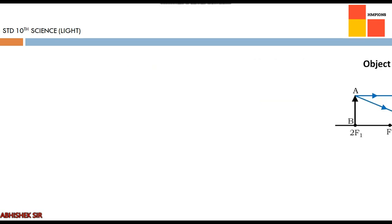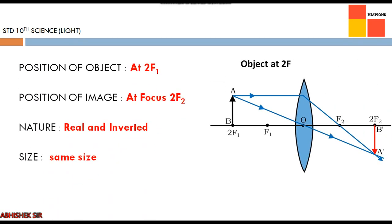Third case — object at 2f1: light rays refract, converge, and meet exactly at 2f2 on the other side. Nature is real and inverted, and comparing sizes, the image and object are the same size.